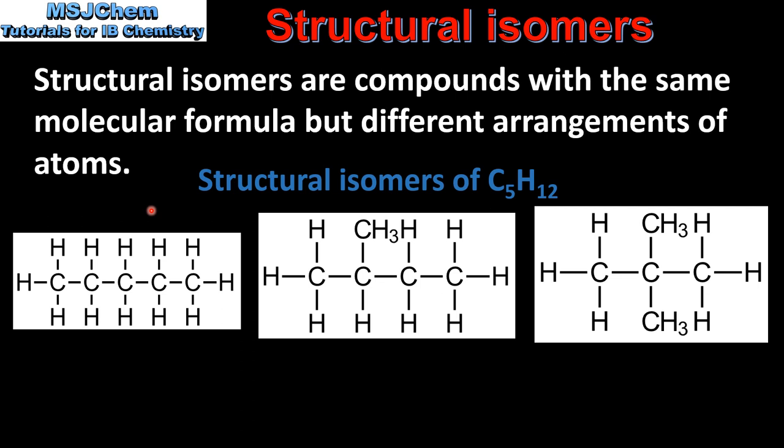Here we have the three structural isomers of C5H12. Each compound has the same molecular formula with 5 carbon atoms and 12 hydrogen atoms. Although they all have the same molecular formula, each isomer has a different arrangement of atoms. The first is a straight chain isomer whereas the last two are branched isomers.